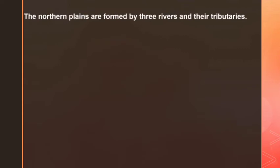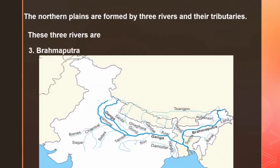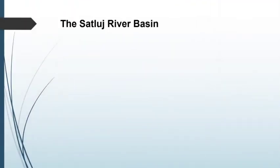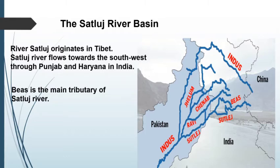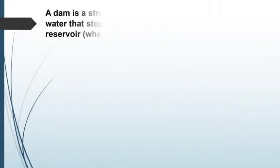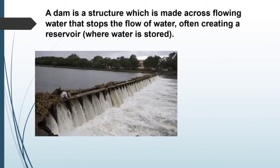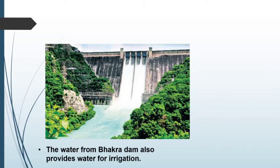The northern plains are formed by three rivers and their tributaries: the Satlej, Ganga and Brahmaputra. River Satlej originates in Tibet and flows towards the southwest through Punjab and Haryana in India. Beas is the main tributary of the Satlej river. The Bhakra Dam is built across the Satlej river. A dam is a structure made across flowing water that stops the flow, often creating a reservoir. The Bhakra Dam generates hydroelectricity — electricity generated from fast flowing water — and also provides water for irrigation.